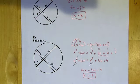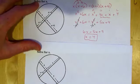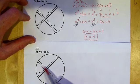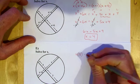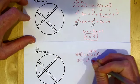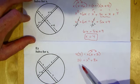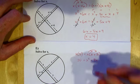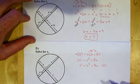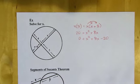Moving to the next page, there's another similar problem — you can pause and try it. Setting it up: 4 times 5 equals X times the quantity X plus 8. So 20 equals X squared plus 8X. This one is trickier because the X squareds won't just disappear. I need to set this equal to zero by subtracting 20 from both sides, giving X squared plus 8X minus 20 equals 0.